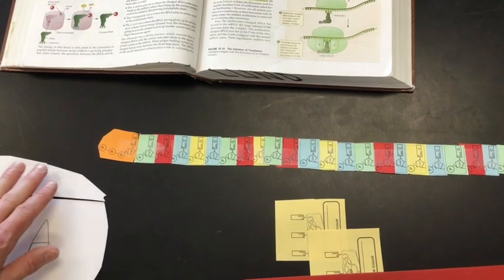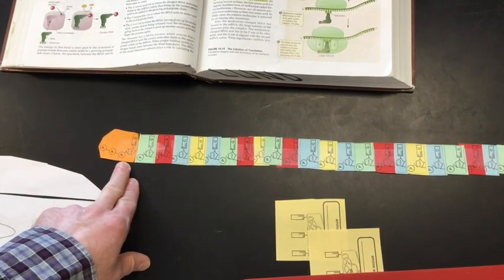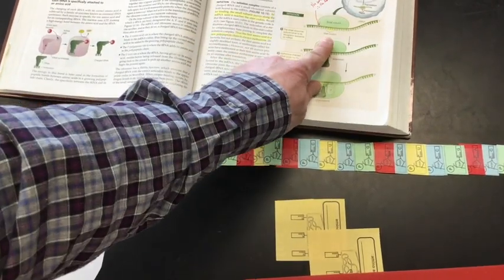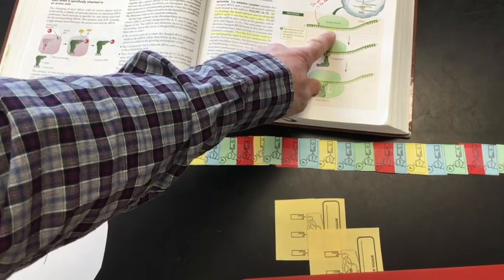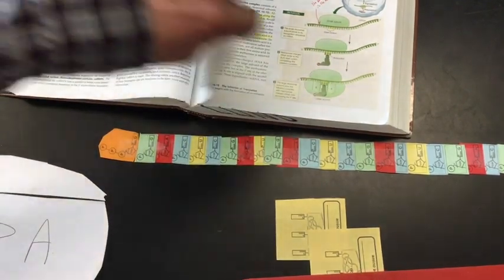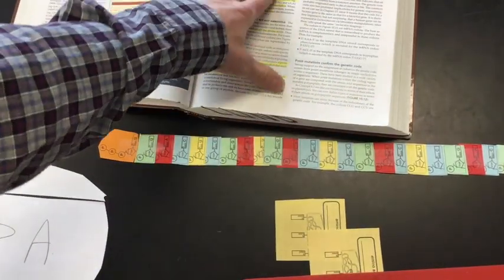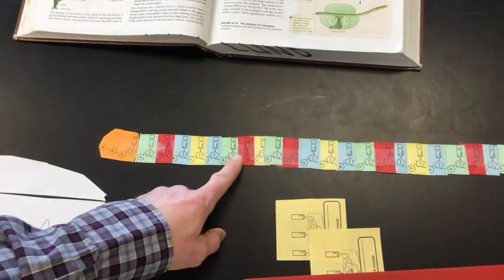I'm going to start with my 5 prime end and I'm going to try to find a start codon. Remember, the start codon is the methionine, it's the AUG. If you needed to reference that, you go back to the code chart on page 197 and find that AUG is methionine, that's the start codon. I'm going to look for an AUG - there's one right there, AUG.